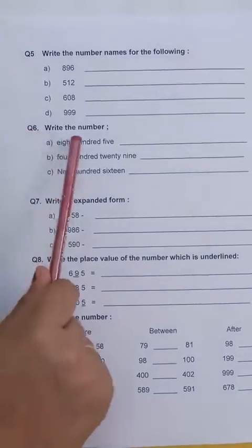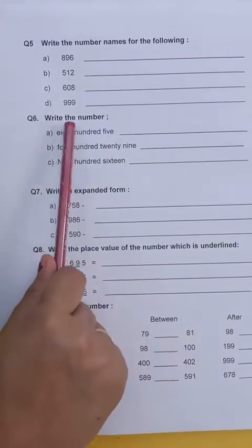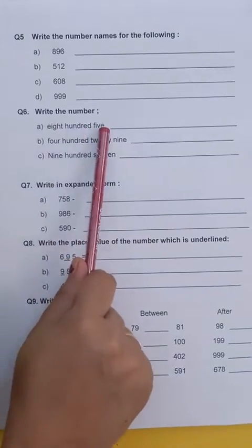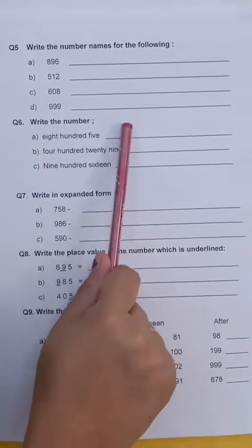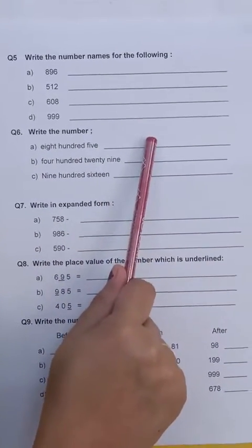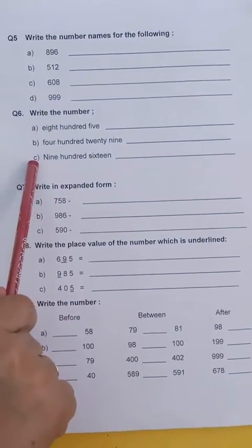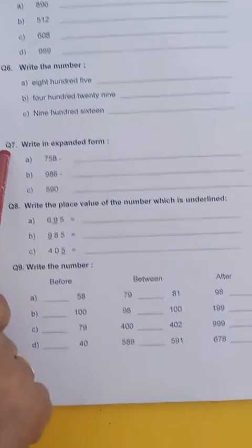Question number 6. You will write the numbers. That means 805. How will you write? 8, 0 and 5. The rest 2 you will be doing yourself. Then coming to question number 7.